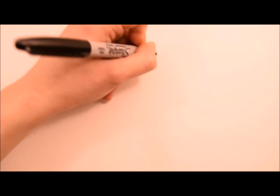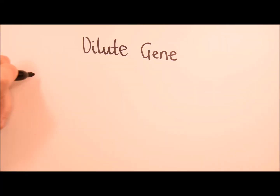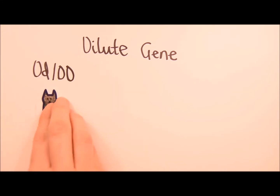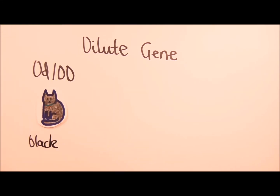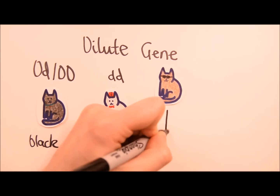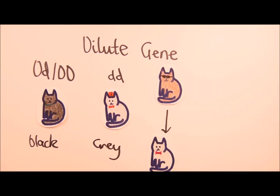Another gene that affects coat colour is the dilute gene. When cats are homozygous for this recessive allele, the cat will have a paler coat colour. Black becomes grey, chocolate becomes lilac, and cinnamon becomes fawn.